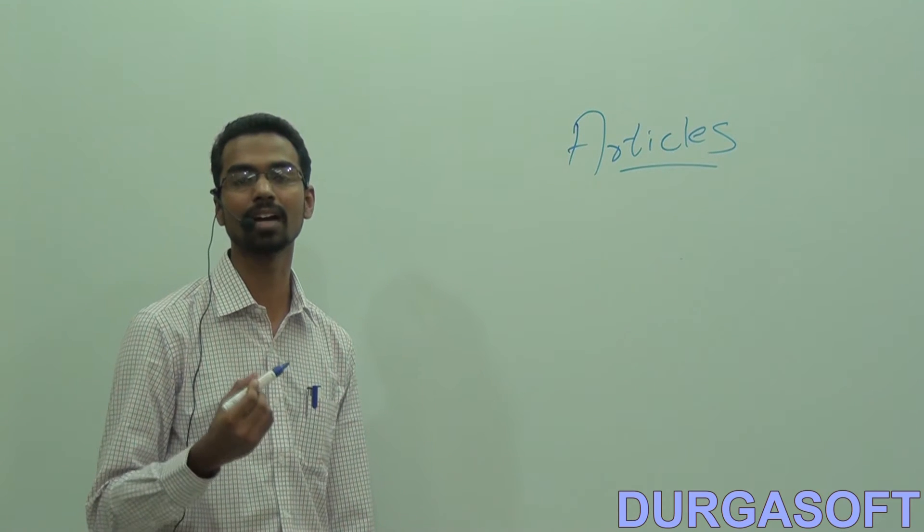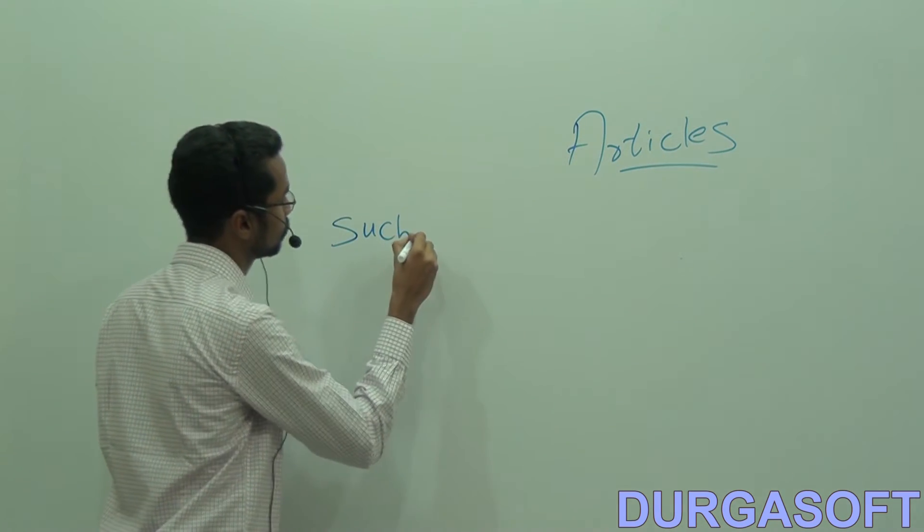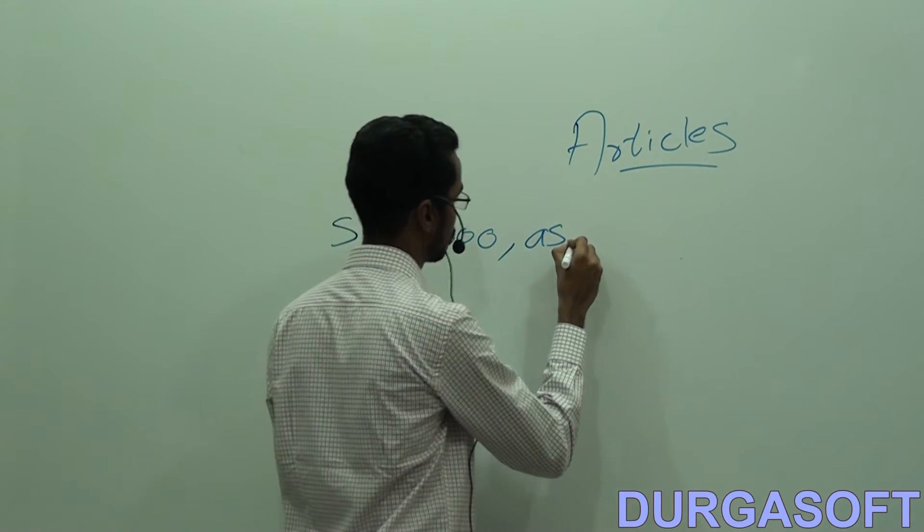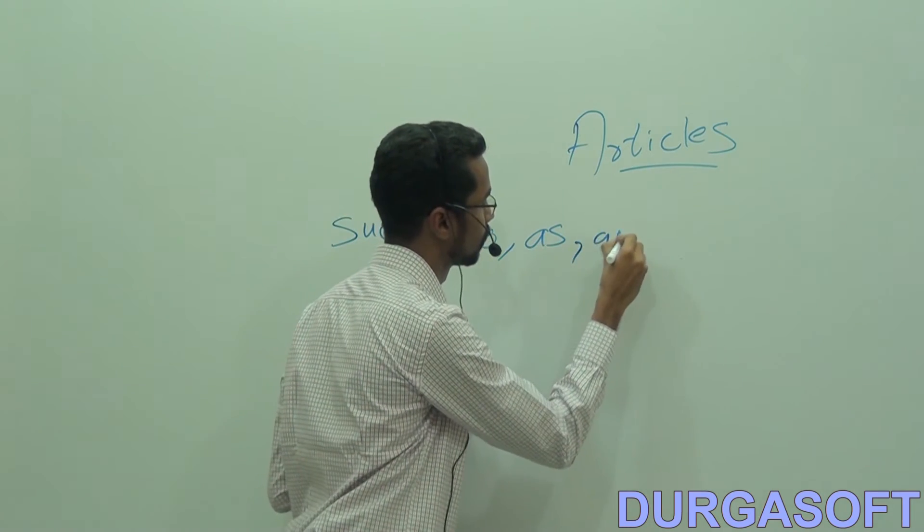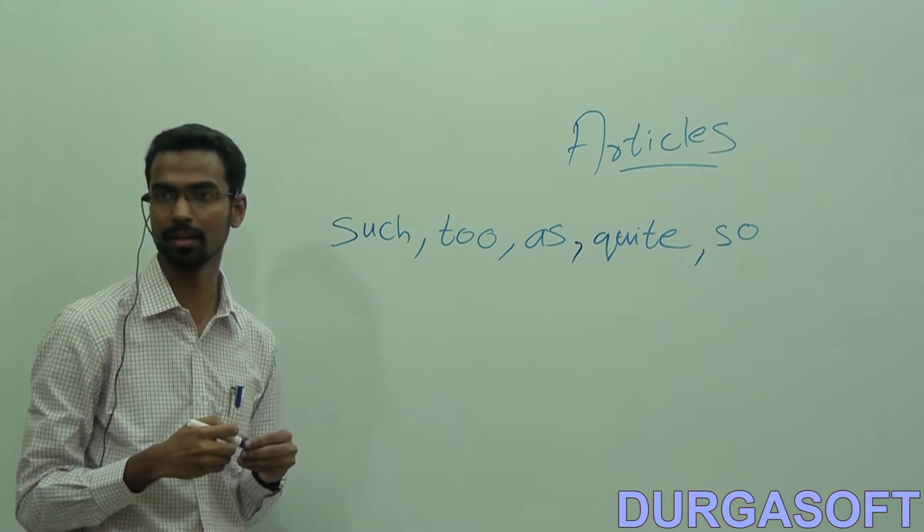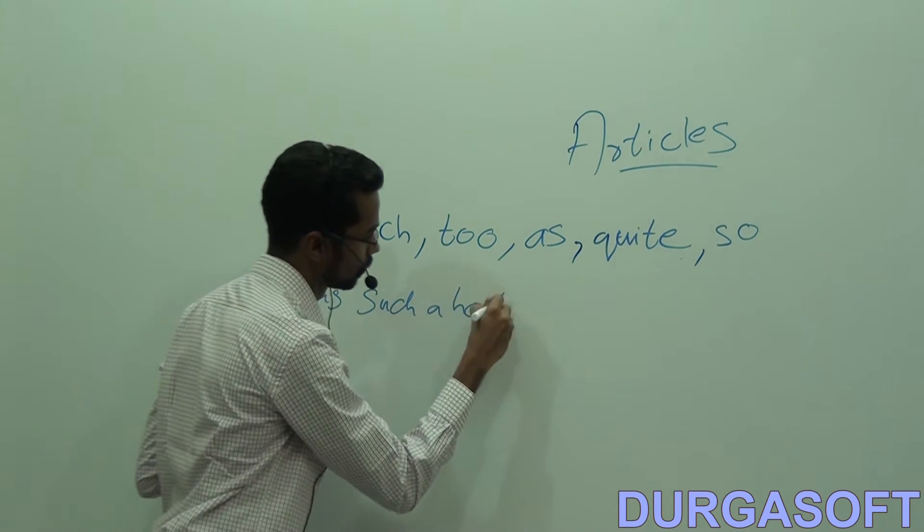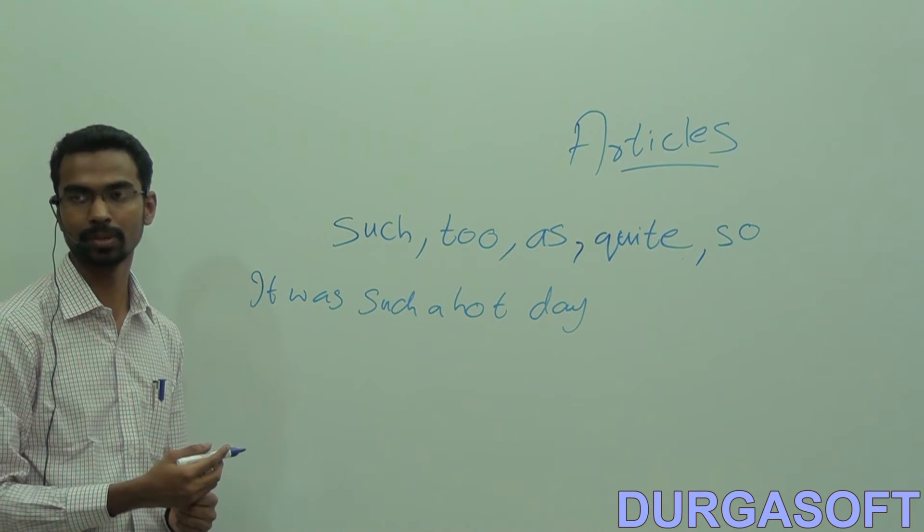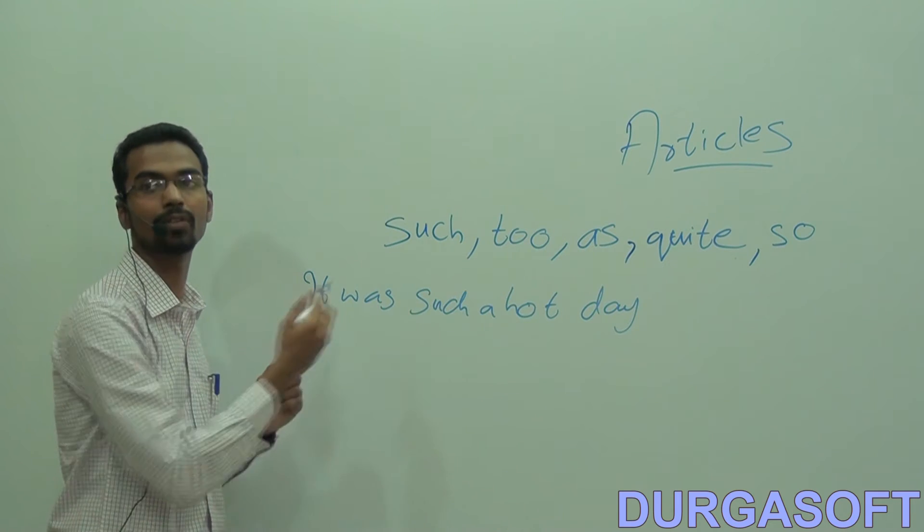Similarly, we use indefinite articles in certain sentences which use the expressions such, too, as, quite, so, etc. For example, I would say, it was such a hot day that I could not go out. So please don't make the mistake of saying, it was a such hot day that I could not go out. No. So placement of the article is important.